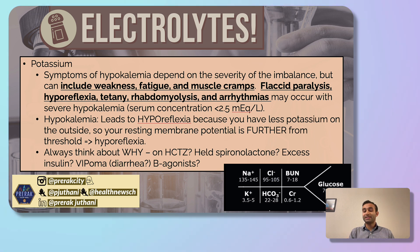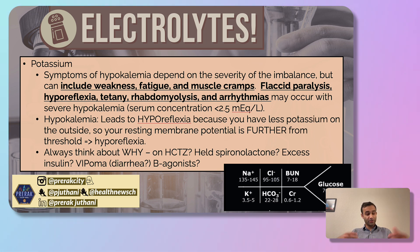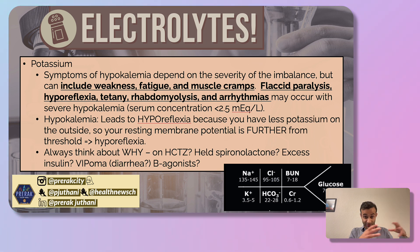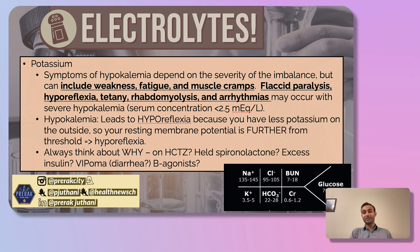We correct low potassium by giving people potassium back. We can do it orally with potassium pills, or through the IV. Hypokalemia often leads to hyporeflexia because you have low potassium on the outside of your cells. When extracellular potassium is low, your resting membrane potential is further from threshold, making it harder to fire an action potential — and action potentials are responsible for muscle contraction.